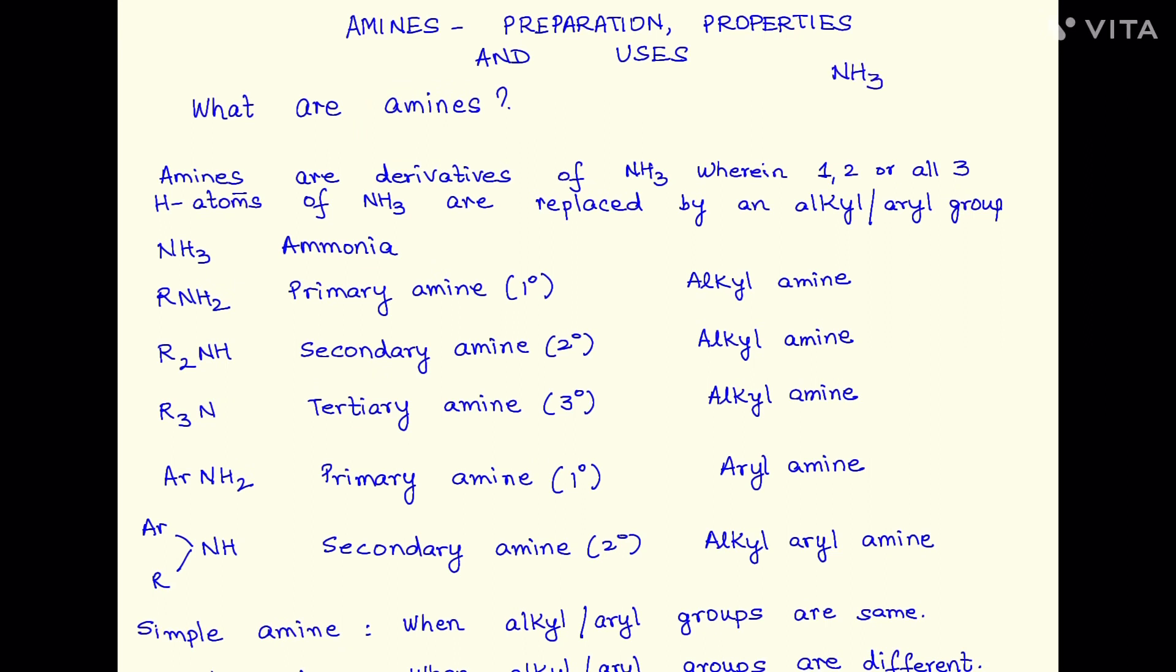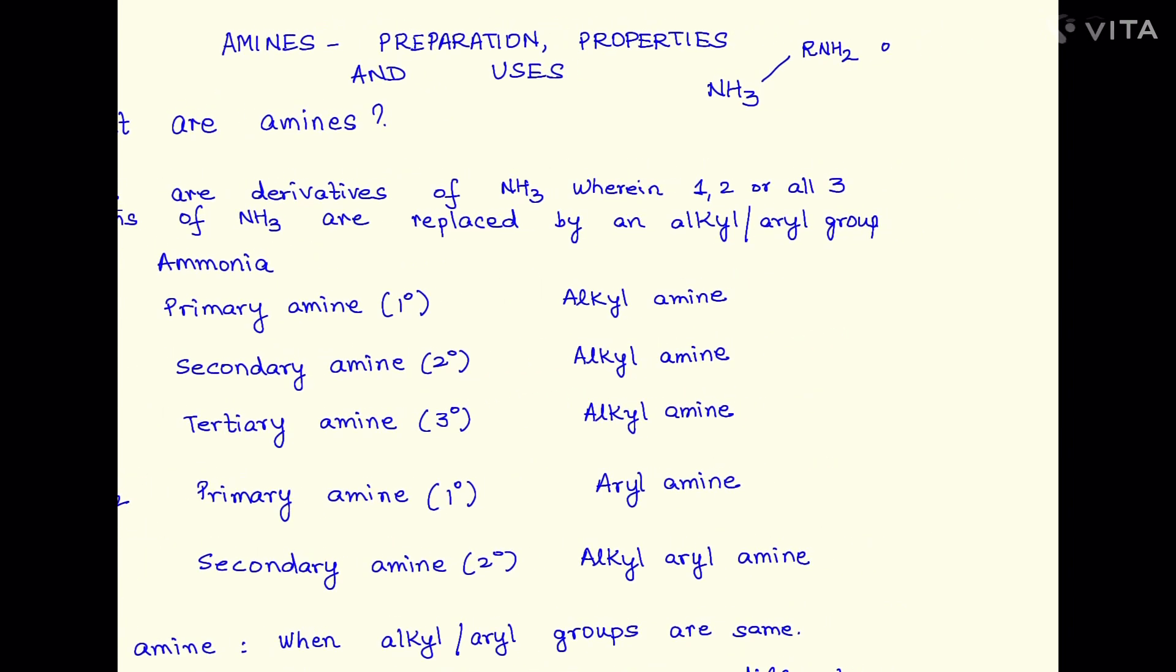Ammonia is NH3. You replace one hydrogen atom by an alkyl or aryl group and you have a primary amine. When I say alkyl or aryl, that means I can have an aromatic ring as well attached to the NH2.